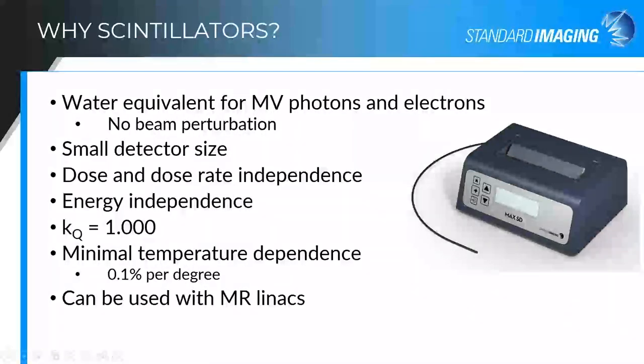One of the first questions usually asked about scintillation detectors is why would I want to choose this over something else that's available? The major advantage of scintillators is that they're water equivalent for both megavoltage photons and electrons. The key point is that you're not changing the radiation interaction right at the point of measurement, and then having to do additional corrections for that perturbation. They can be made very small, so they're useful for small fields in that you're measuring over a very small physical area.